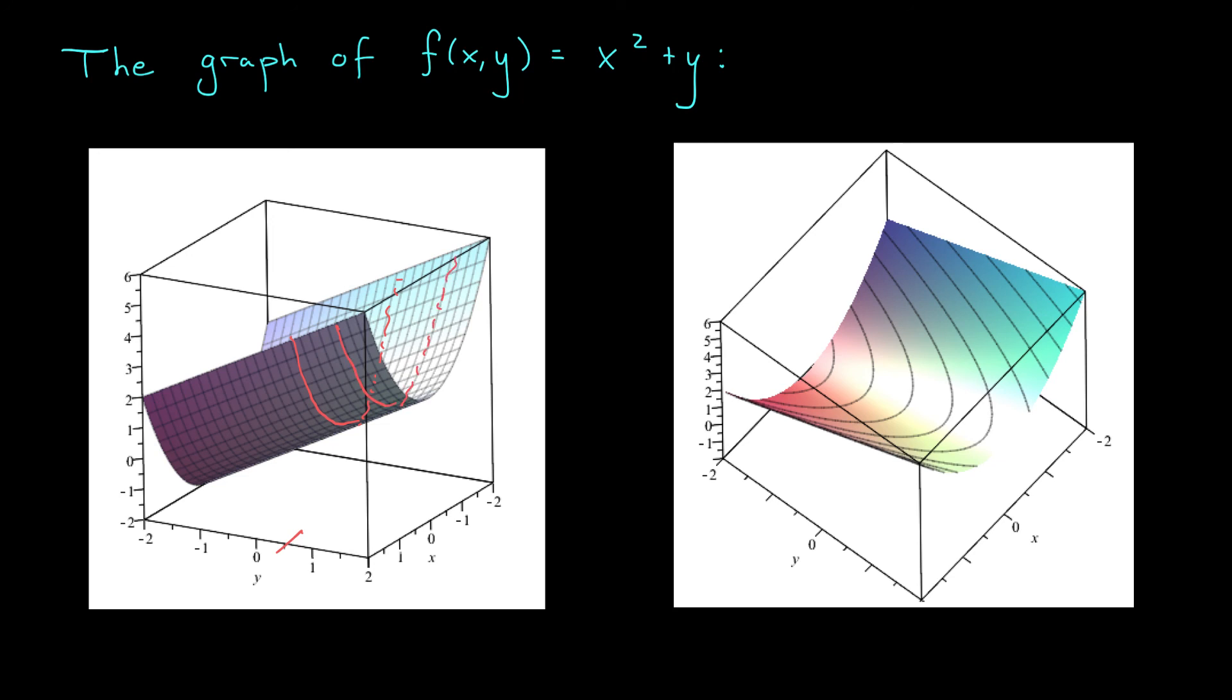If instead I slice this in the x-axis, well then, now you can see those vertical lines that we got from our other cross-sections. Very neat.